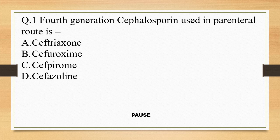Question 1. Fourth generation cephalosporin used in parenteral route is: option A, Ceftriaxone; option B, Cefuroxime; option C, Cefpirome; and option D, Cephazoline. And the right answer is option C, Cefpirome.